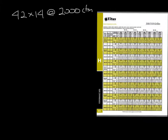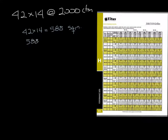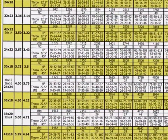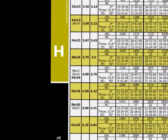Here's what you do to get your data. Multiply the nominal duct height by the width to get the nominal duct area. 42 times 14 is 588 square inches. Divide that by 144 to get 4.08 square feet. Now find a grill that has the closest nominal duct area, which would be this one right here at 4.0 square feet.